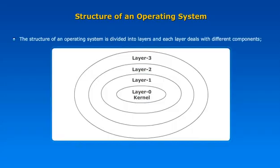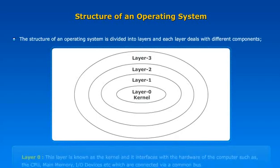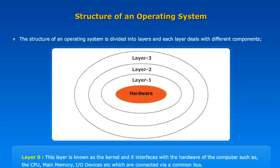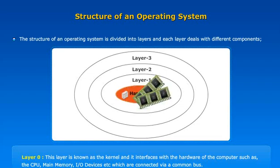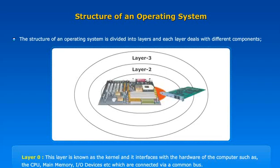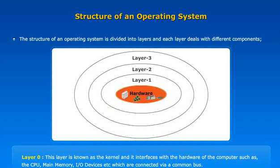The structure of an operating system is divided into layers, and each layer deals with different components. The hardware layer includes the CPU, main memory, I/O devices, etc., which are connected via a common bus.